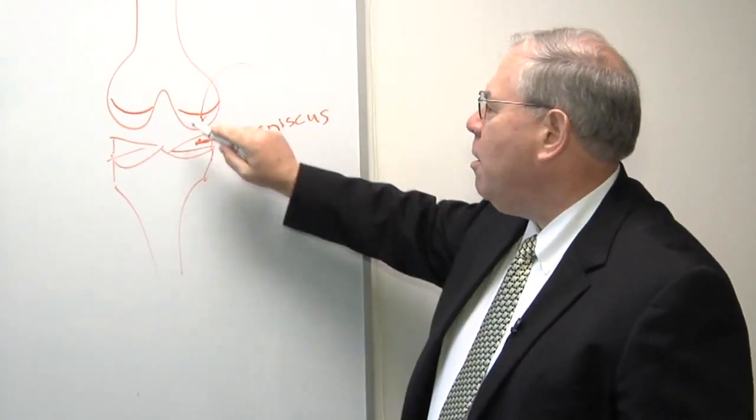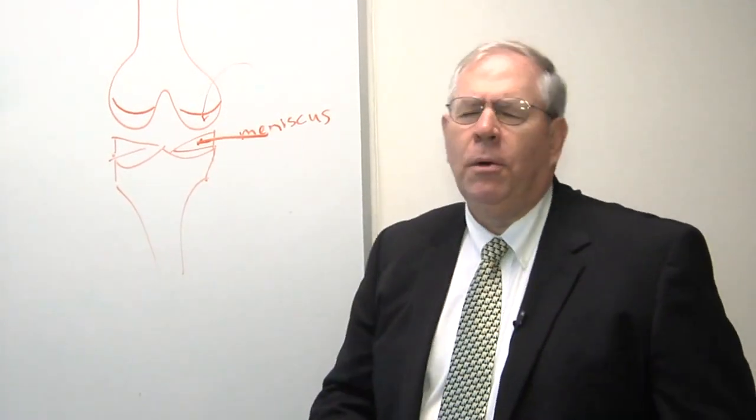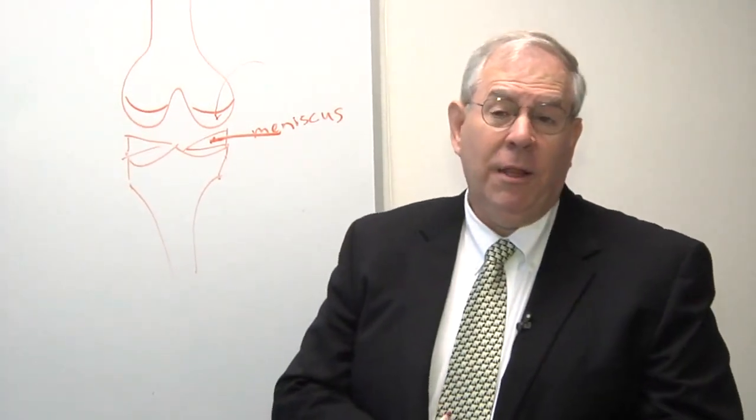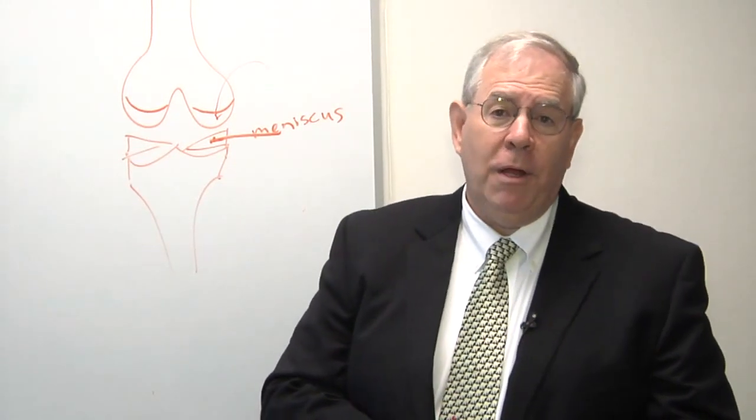The other type of cartilage is the covering cartilage that's on the surface of the bone that's white and smooth and slippery, like the knuckle on the end of the turkey drumstick, that white covering on the end of the bone.